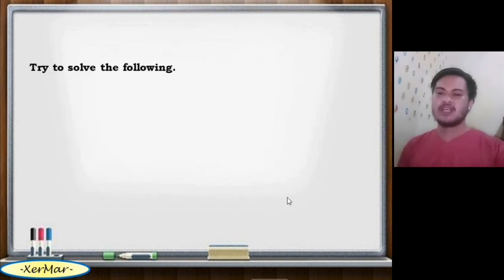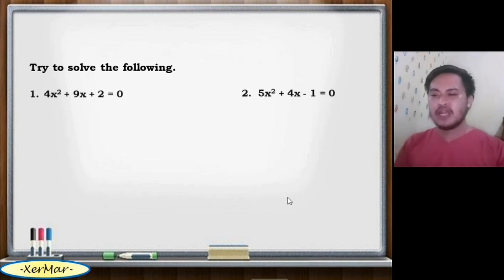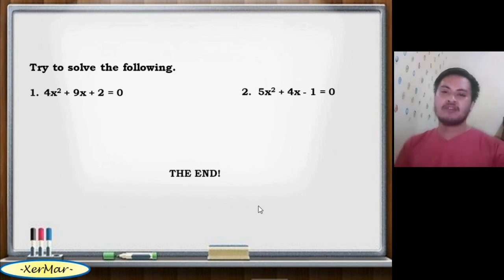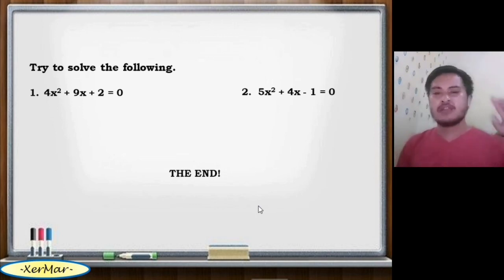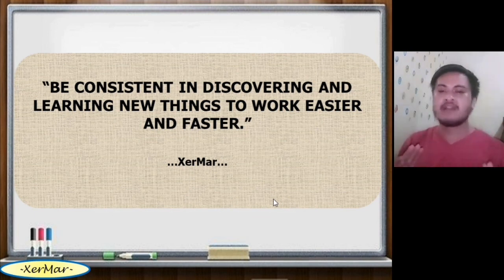Try to solve the following using the alternative shortcut technique discussed. Number 1: 4x squared plus 9x plus 2 equals 0. Number 2: 5x squared plus 4x minus 1 equals 0. This is the end of our lesson on solving quadratic equations by factoring part 2, where the value of a is greater than 1. Be consistent in discovering and learning new things to work easier and faster. Maraming salamat po.